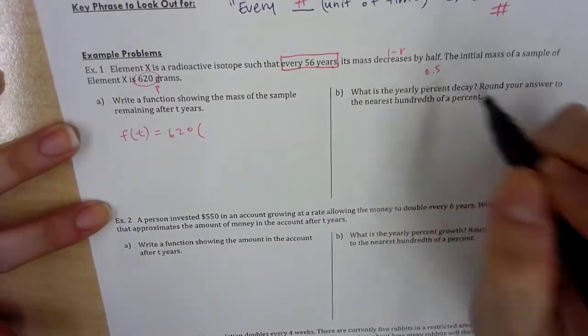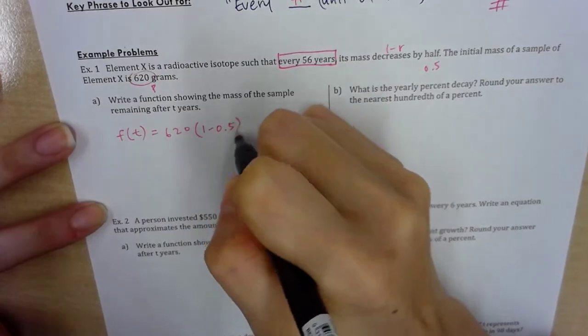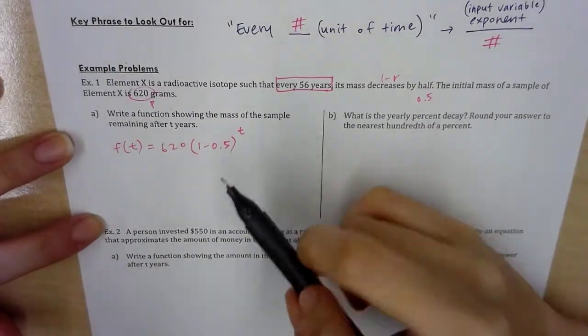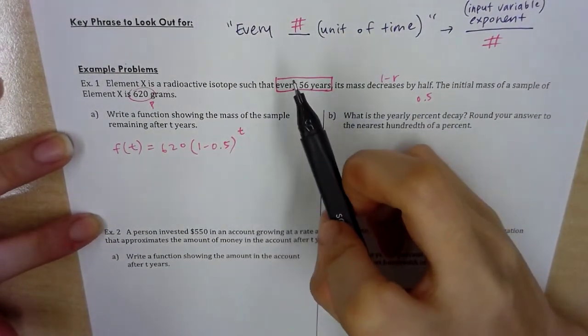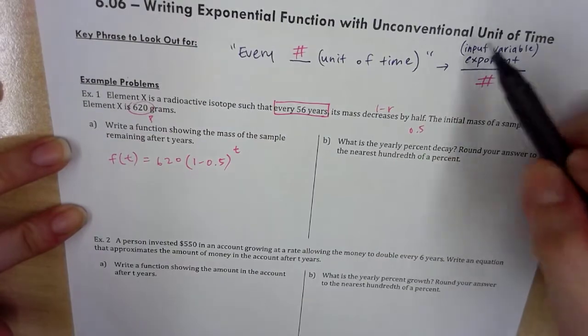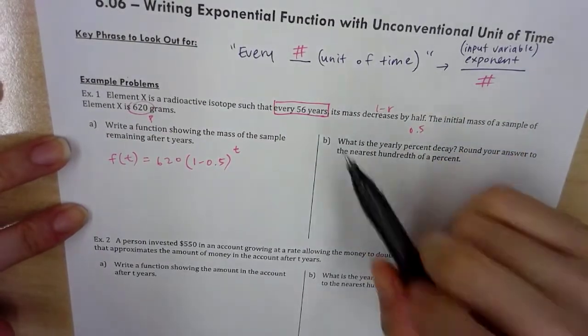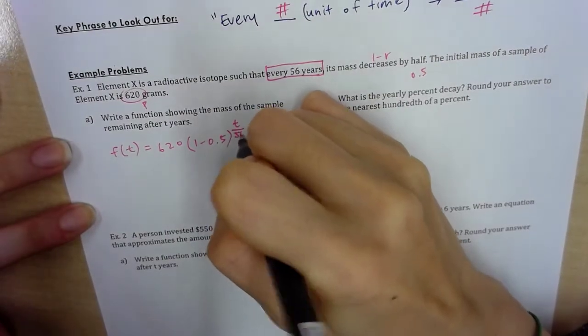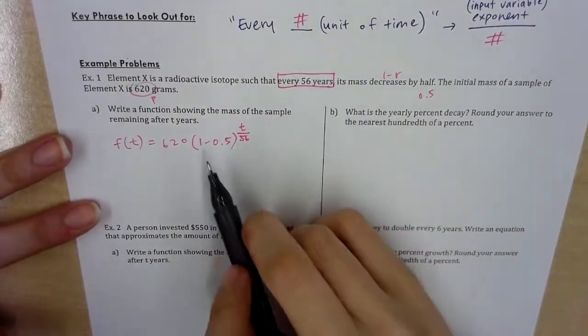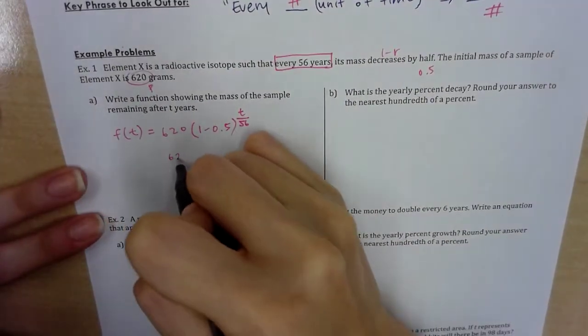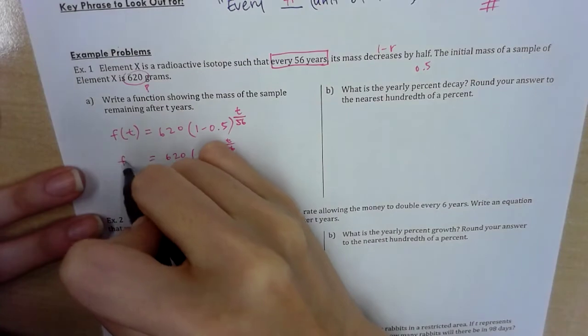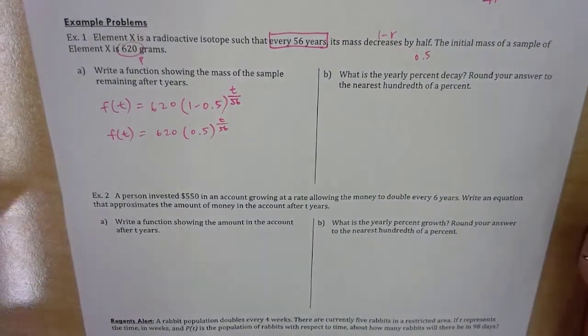Write a function showing the mass of sample remaining after t years. So we start out our function just like how we always do: f(t) = 620 times (1 minus 0.5) raised to t. But hold up, it wasn't just plain t, because I said every 56 years I lose 50% of the mass. So we're going to actually finesse the exponent: every 56 years.